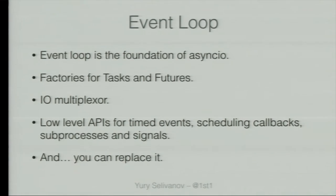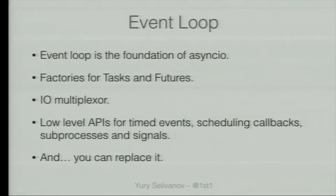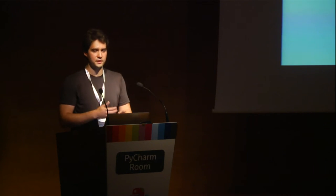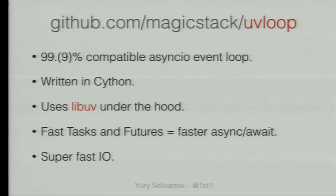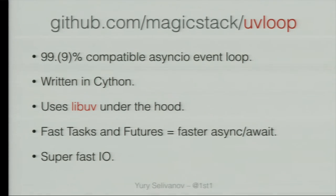The event loop is the foundation - the engine that executes asyncIO code. It provides factories for tasks and futures, it's an IO multiplexer that reads and writes data. It provides low-level APIs for scheduling callbacks, timed events, sub-processes, and Unix signals. The best part is you can replace it - that's what we did with uvloop. UVloop is 99.9% compatible with asyncIO. I'm not aware of any incompatibilities. You can drop uvloop into pretty much any program and it will just work. It's written in Cython - and by the way, Cython is amazing and underappreciated.